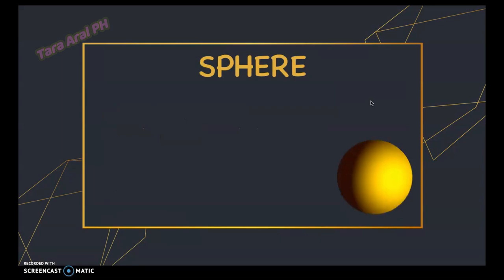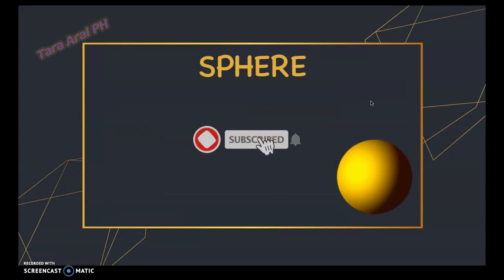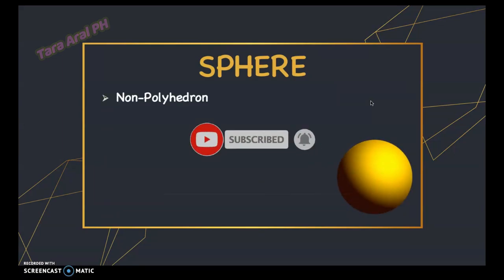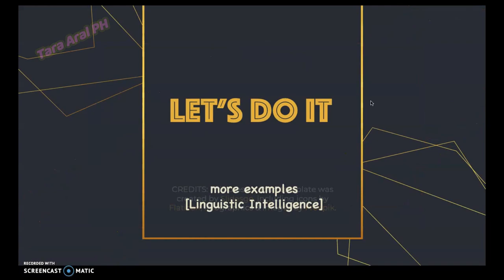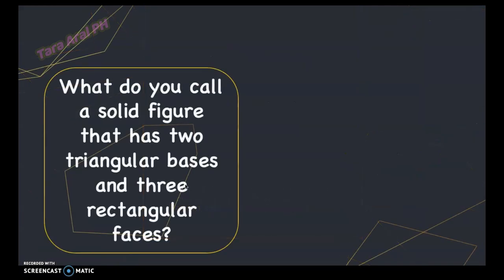Now, a sphere is a non-polyhedron. It is a round solid figure with all its points on its surface equidistant from the center. It has only one curved face, no vertices, and no edges.